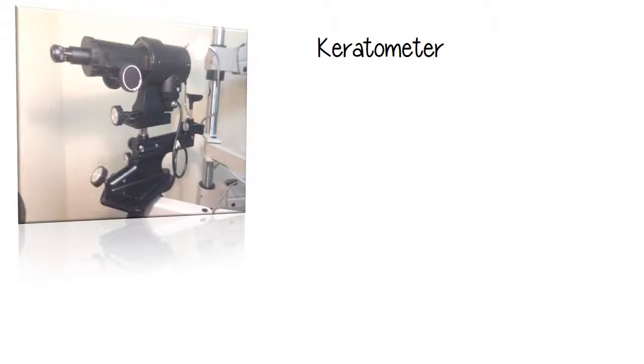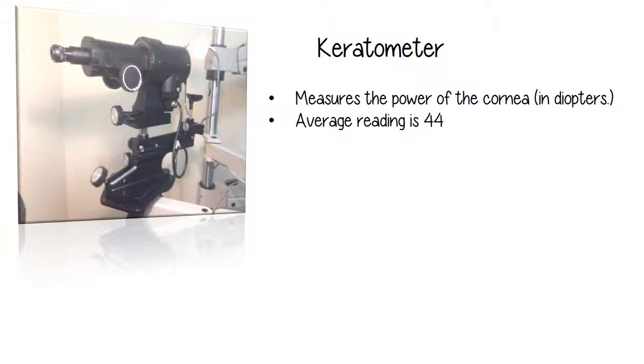This is a keratometer and it measures corneal curvature and then puts it in diopters. The average reading on the keratometer is 44. The higher the k reading, the steeper the curve.